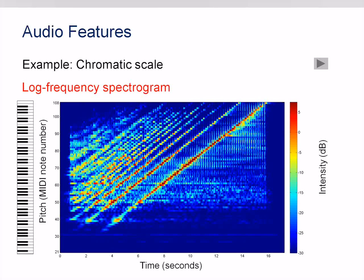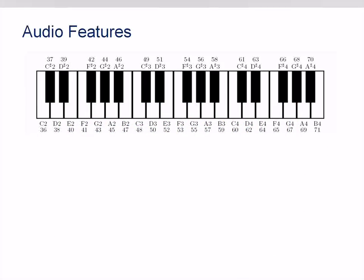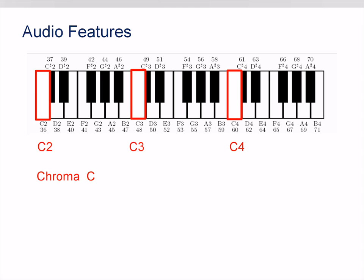The energy distribution across the partials is a crucial factor for the actual sound or timbre of the instrument. To become more robust to variations in instrumentation and timbre, one can discard the octave information by summing up all pitch-wise subbands that differ by one or several octaves. This yields 12 accumulated subbands, also referred to as chroma subbands. Considering the piano keyboard, where the keys correspond to the equal-tempered scale, the chroma attributes refer to the 12 pitch-spelling attributes C, C-sharp, D, D-sharp, and so on. For example, the chroma C refers to all C notes irrespective of the octave — whether a high C or a low C.